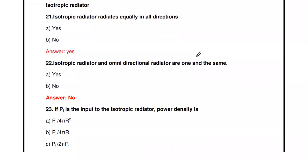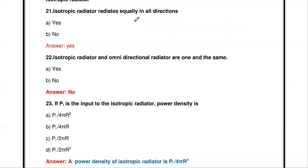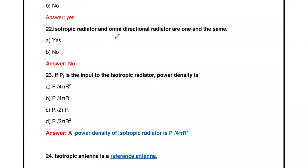Now for isotropic antenna questions. True or false: the isotropic radiator radiates equally in all directions. True — the isotropic radiator is a reference antenna used in measuring antenna gain, directivity, and so on, and it radiates equally in all directions. Next: are isotropic radiator and omnidirectional radiator one and the same? False — isotropic radiator and omnidirectional radiator are different.